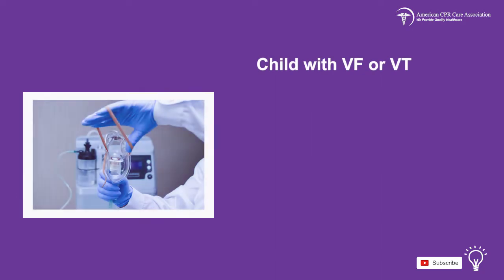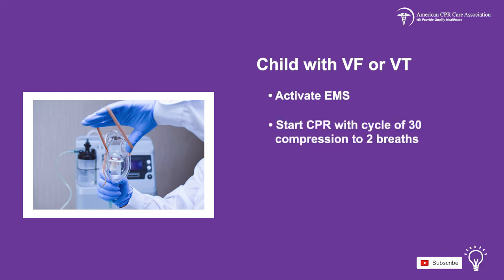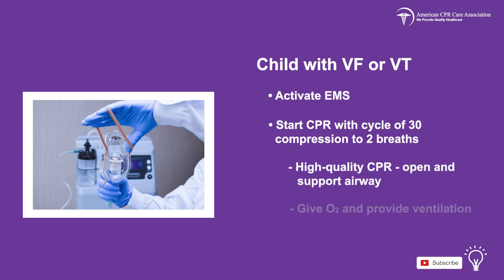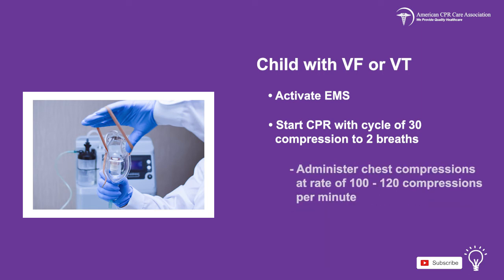For VF or VT, as soon as you identify a child with VF or VT rhythm, immediately activate EMS and start CPR. For high-quality CPR, start with a cycle of 30 compressions to 2 breaths, opening and supporting the airway, giving oxygen and ventilation, and providing chest compressions at a rate of 100 to 120 compressions per minute.